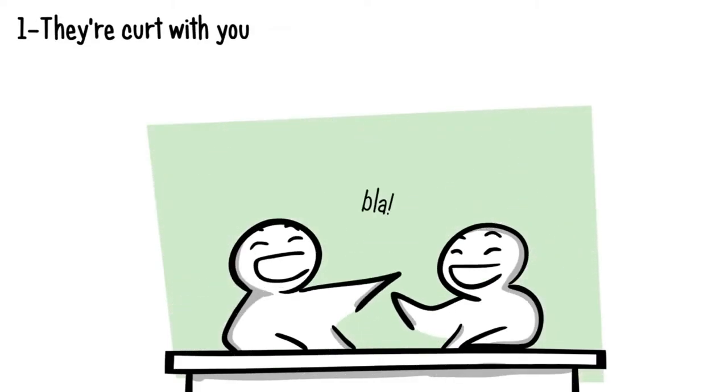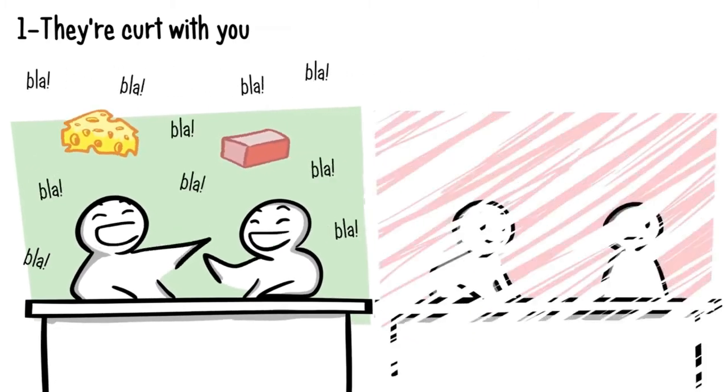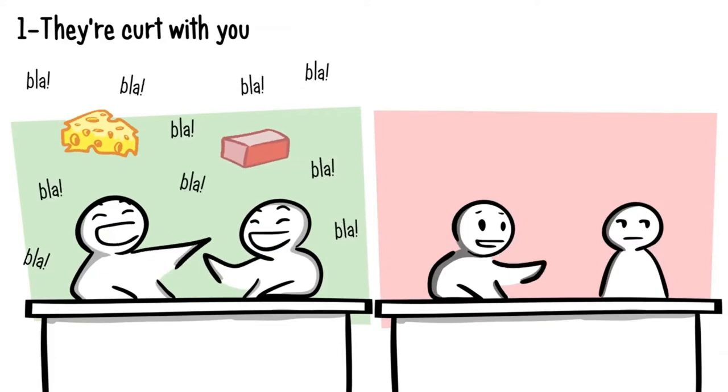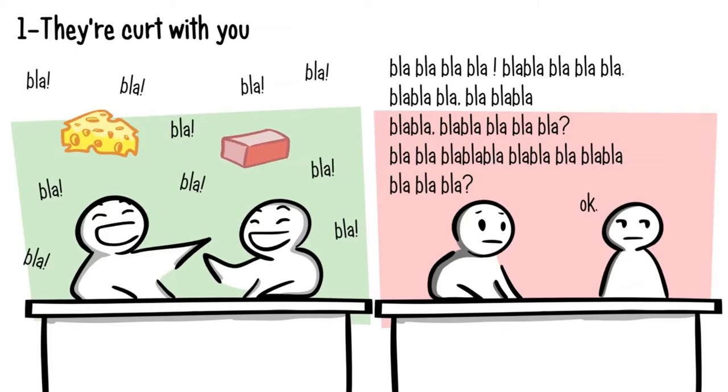Number one, they're curt with you. Do you ever feel like you can talk to your best friend 24-7? Even if the two of you aren't having a deep philosophical conversation, talking about something as silly as cheese or bricks seems entertaining, right? But when someone dislikes you, it's the complete opposite. They cut the conversation short. If you ask them how their day is going, they'll give you one-worded answers like fine or okay. It becomes clear they don't want to talk to you.